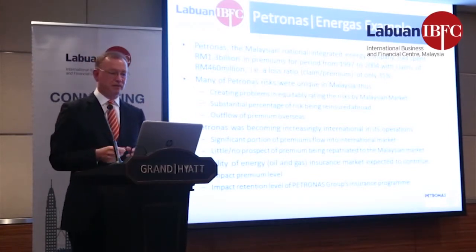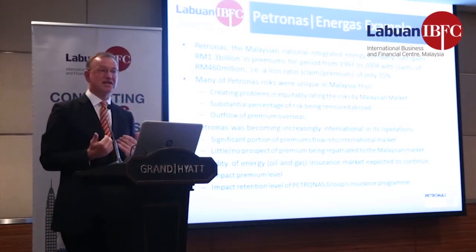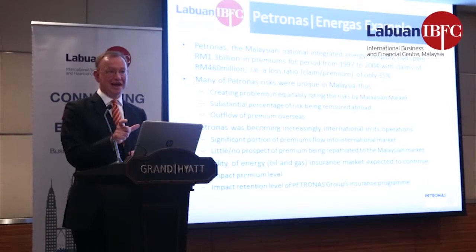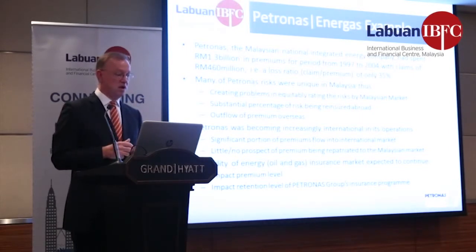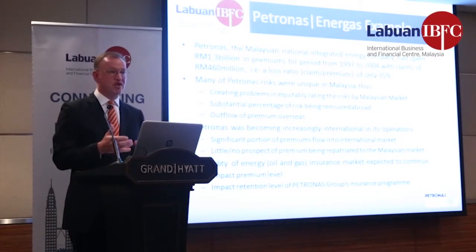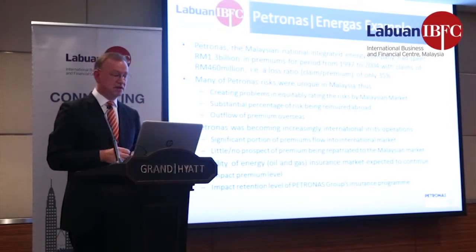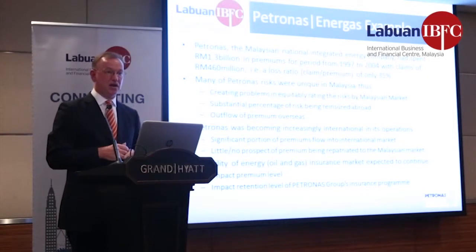Petronas is the national oil company of Malaysia. Between 1997 and 2004, it spent 1.3 billion ringgit in premium and received back in claims only 460 million ringgit — a loss ratio of 35%. It is by far the largest oil and gas company in Malaysia, and therefore pretty unique in the Malaysian insurance market. A lot of its insurance risk was ultimately reinsured abroad — coming to London and other major reinsurance centres — meaning a significant amount of premium was going overseas from Malaysia, with no accumulation of knowledge and expertise within Malaysia.